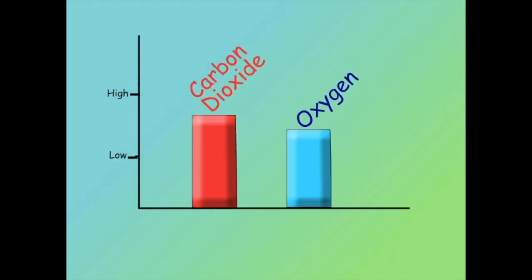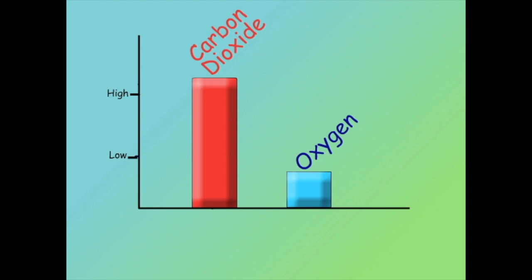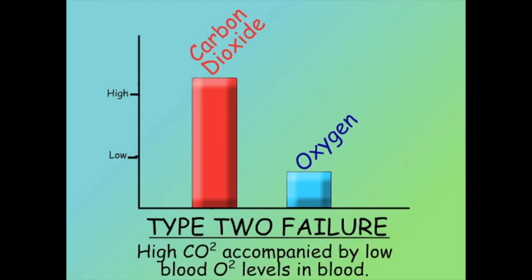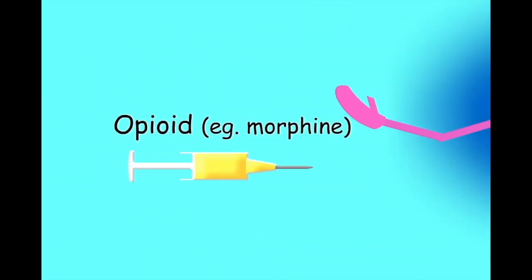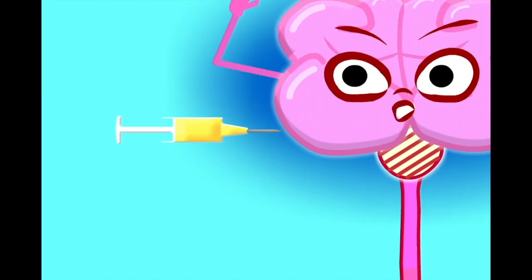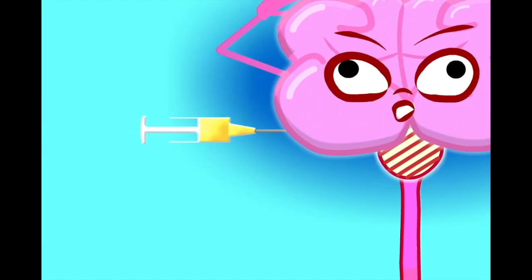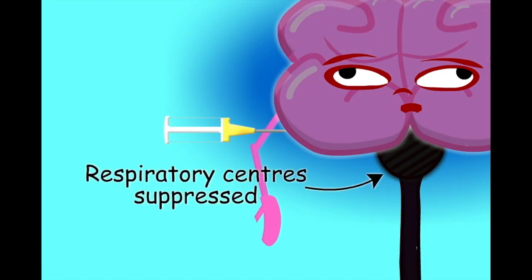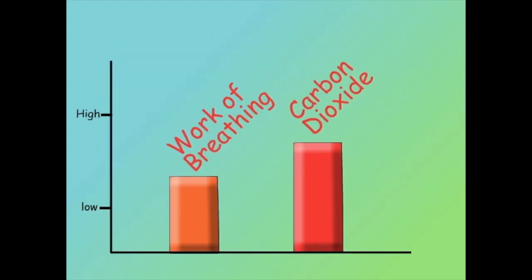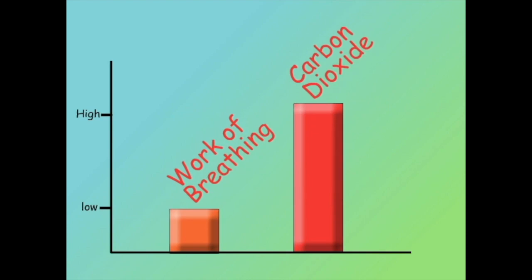When hypercapnia is accompanied by hypoxia it can be described as a type 2 respiratory failure. Some drugs can have suppressive effects on the respiratory centres. Opiates such as morphine or heroin, if too much is taken, have the potential to affect the brain leading to a reduction in respiratory effort and an increase in carbon dioxide.